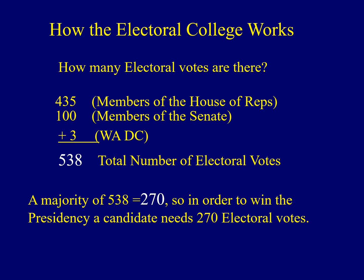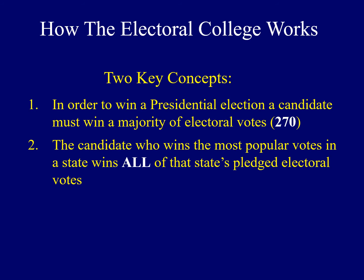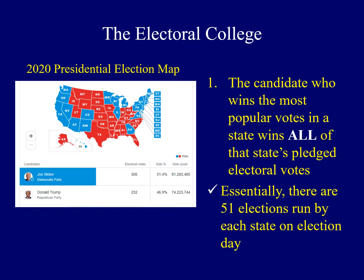How does a person win electoral votes? That's the second key concept. The candidate who wins the most popular votes in an individual state wins all of that state's pledged electoral votes. Rather than having one election on a Tuesday in November every four years for president, essentially what we have are 51 elections — one in every state plus Washington D.C. — because that's how electoral votes are handed out on a state-by-state basis.